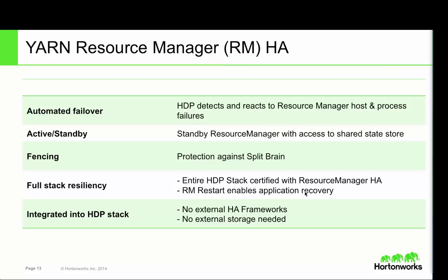I'll start with resource manager reliability. For those using the HDP 1.x stack, there were significant concerns with reliability and third-party dependencies which we set out to fix in the HDP 2.1 release. The key feature is RMHA — Resource Manager High Availability. The primary goal is to enable automated failover so that the stack itself detects any process failures or host failures and automatically transfers control over to a standby resource manager. The architecture is built around an active-standby model wherein a standby resource manager is always up and running.